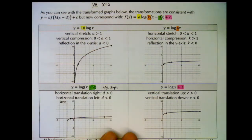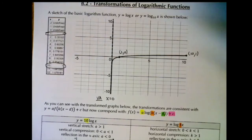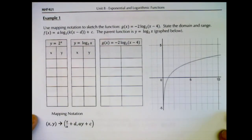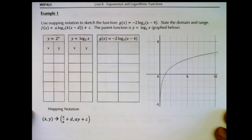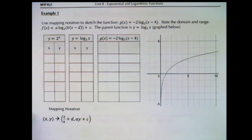So how do we graph using transformations? The exact same way we've been doing it before, just with a new parent function. The trickiest part is getting the parent function's graph. After that, we use mapping notation by picking out a, k, d, and c, writing our mapping notation, using it to generate new coordinates, and then plotting the graph. Let's go through that exercise right now.